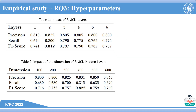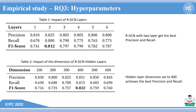We also studied how the hyperparameters impact the effectiveness. We tuned the number of hidden layers and the dimension of the hidden layers of the relational graph convolution network. Results show that two hidden layers and 400-dimension hidden layers is the optimal configuration.